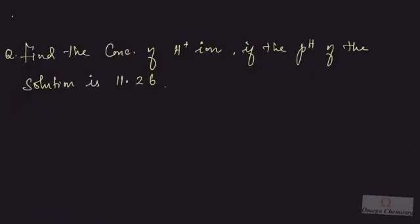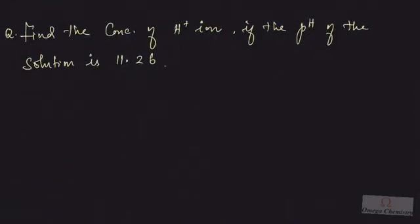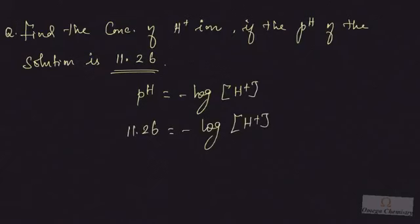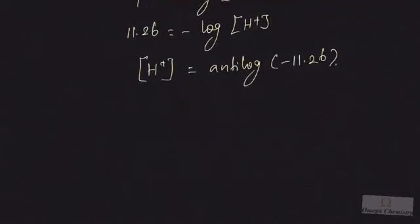Now let's do a practice problem: find the concentration of hydrogen ion if the pH of the solution is 11.26. Note that pH is 11.26, meaning the solution is basic, so H⁺ ion concentration will be very low. We know pH equals negative log of H⁺ ion concentration, so substituting: 11.26 equals minus log of H⁺ ion concentration, which gives H⁺ ion concentration equals antilog of minus 11.26.